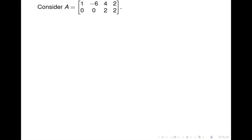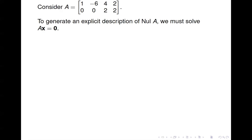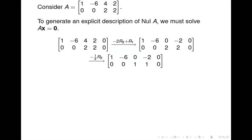Let's look at a specific matrix A. To generate an explicit description of null(A), we have to solve Ax equals 0. An explicit description means you can look at it and generate an entry in null(A). So we throw that into an augmented matrix and do a couple of row operations, giving us the reduced matrix. The general solution is x₁ equals 6x₂ plus 2x₄, and x₃ equals negative x₄.